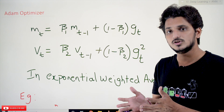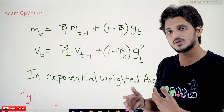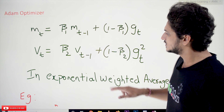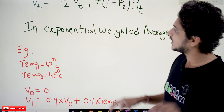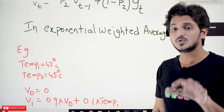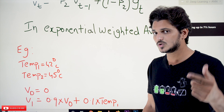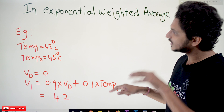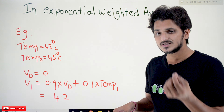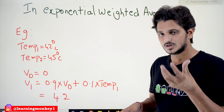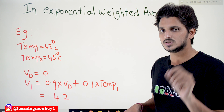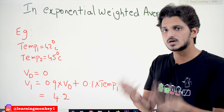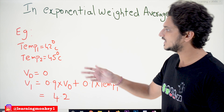Adam is a concept which uses both of these concepts — it takes both into consideration and applies them. One more concept we need to understand is that in Exponential Weighted Average, as discussed in our previous classes, there is a small disadvantage — a small problem with the Exponential Weighted Average. What is that problem and how do we overcome it? We will understand by taking an example.